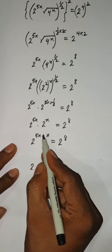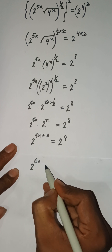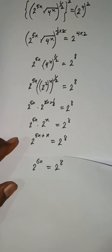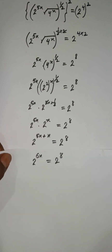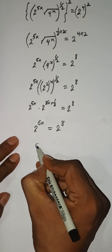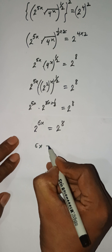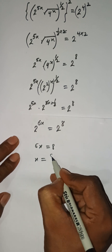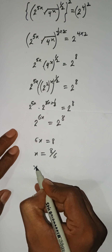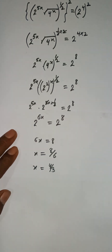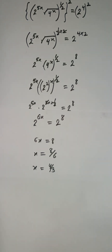Since the bases are the same, the exponents must be equal. We have 5x plus x equals 6x, and 2 to the power 8 on the right. So 6x equals 8, giving us x equals 8 by 6, which simplifies to 4 by 3. This is the solution of the problem. Thank you so much for watching, see you in the next video.